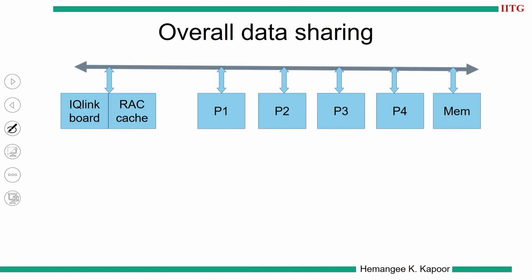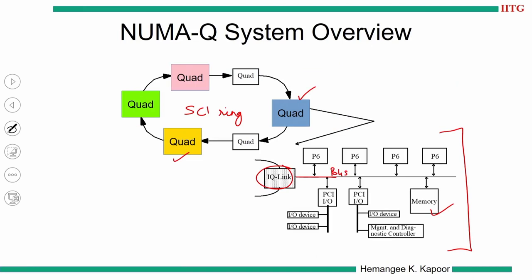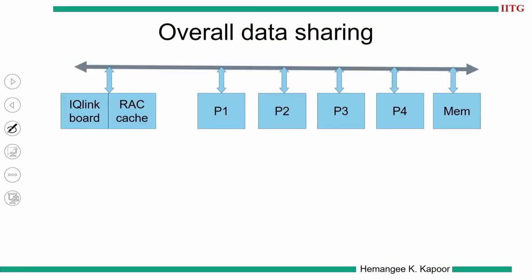These colors represent data coming from different quads. To understand how data sharing works in a cache-based directory, this picture shows a single quad with four processors P1, P2, P3, and P4, a slice of memory, the remote access cache, and the IQ link board. The IQ link board is made up of several components: the bus controller, the directory controller, the network interface, the remote access cache, the directory storage, and the controller. This is the interface to the SCI ring, and up to here you have the quad bus — the symmetric multiprocessor off-the-shelf component.